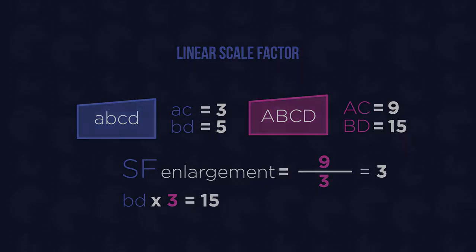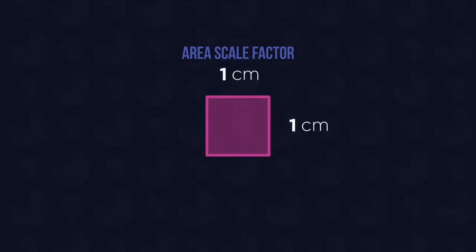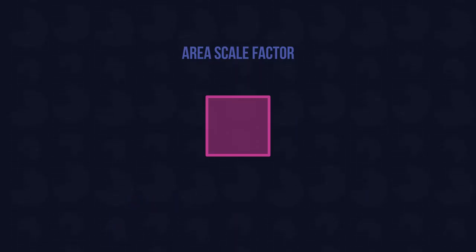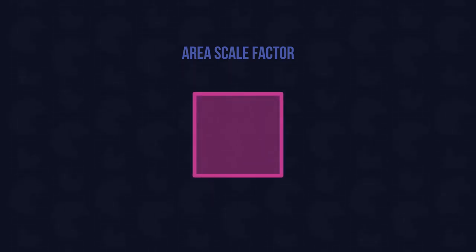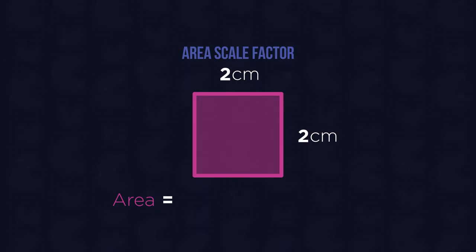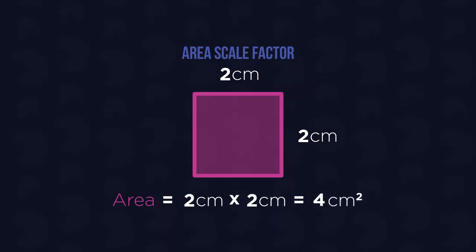The next scale factor we will take a look at is area scale factor. Suppose we have a simple square shape with edges that are 1cm long. The area of this square is 1cm times 1cm, so 1cm squared. But what happens if the shape is enlarged? If we enlarge the shape by a scale factor of 2, each of our edges will now be 2cm — it has doubled. However, what is the area of the square now? Be careful here. The area does not double as you might think. Instead, it will be 2cm times 2cm, which is 4cm squared.